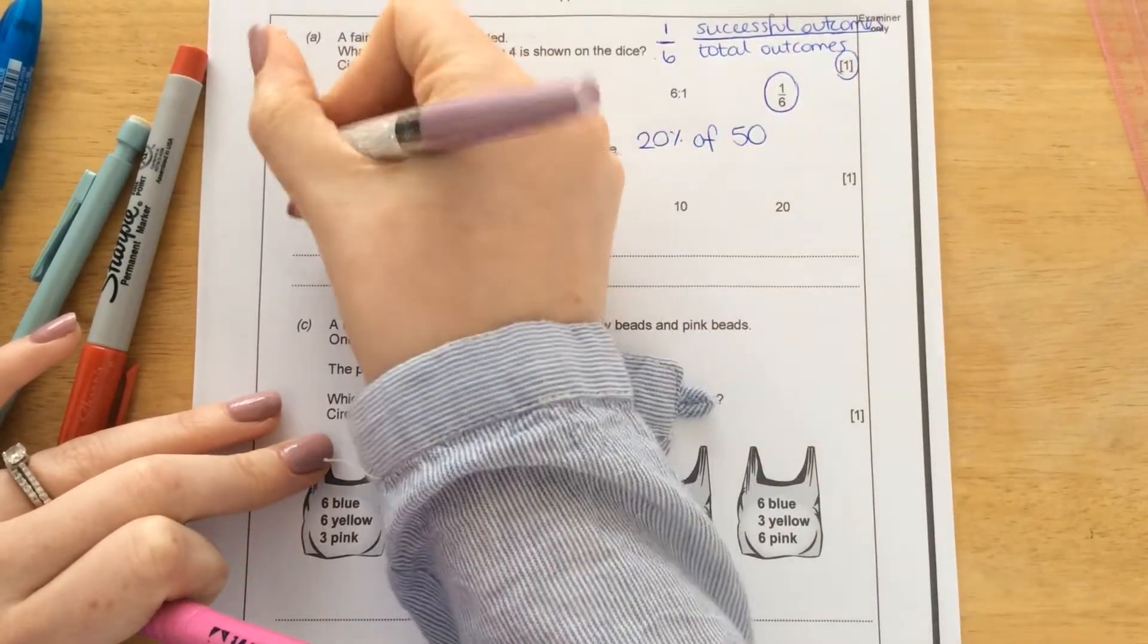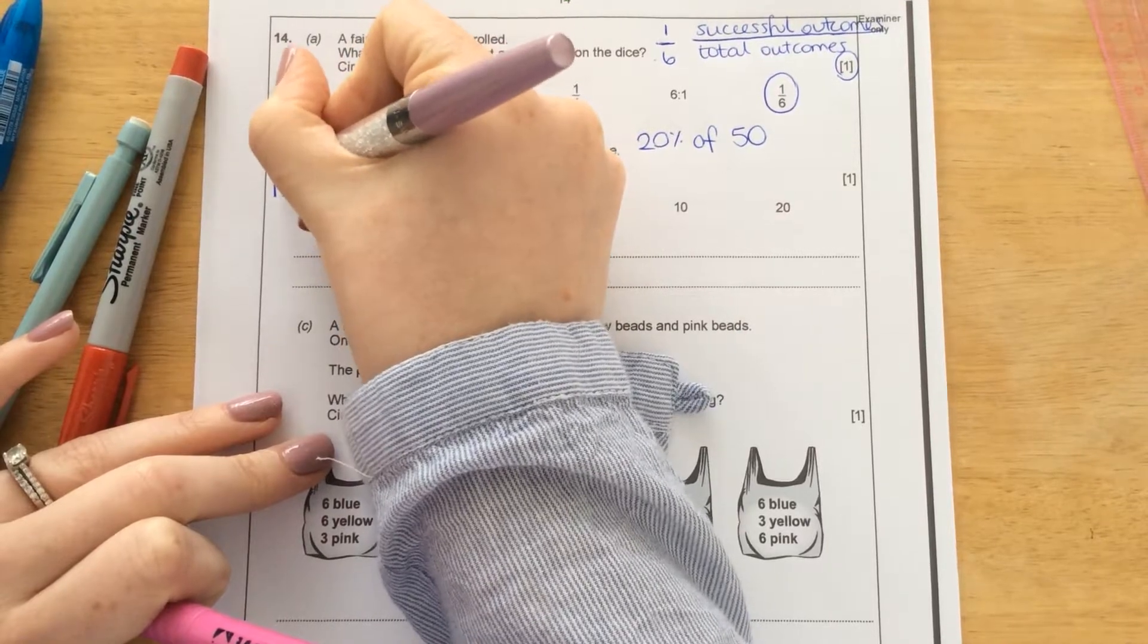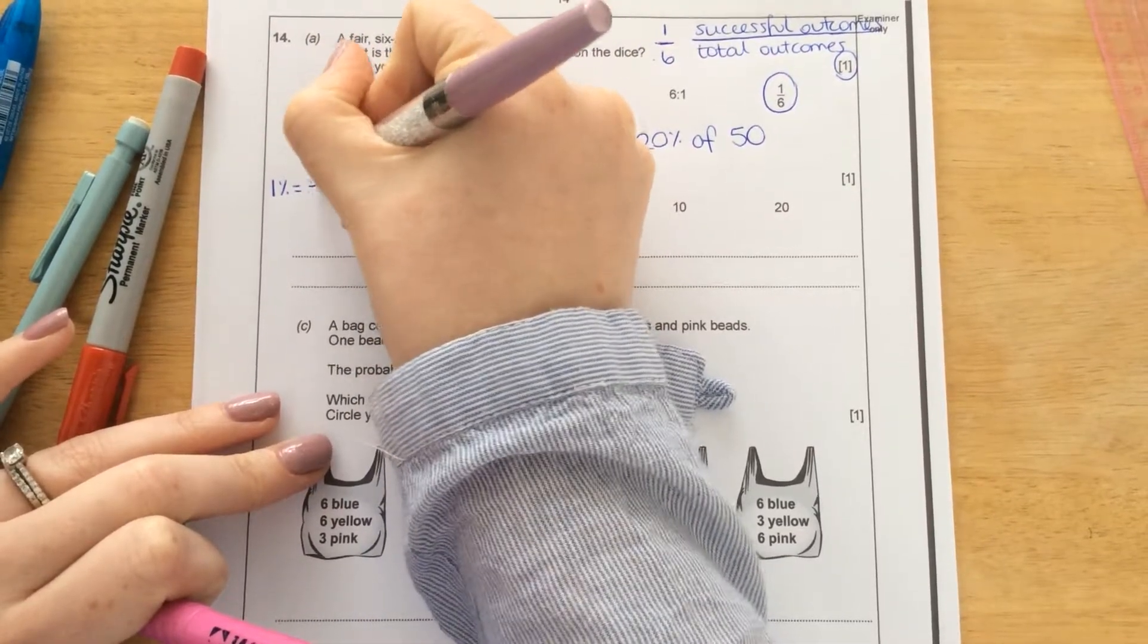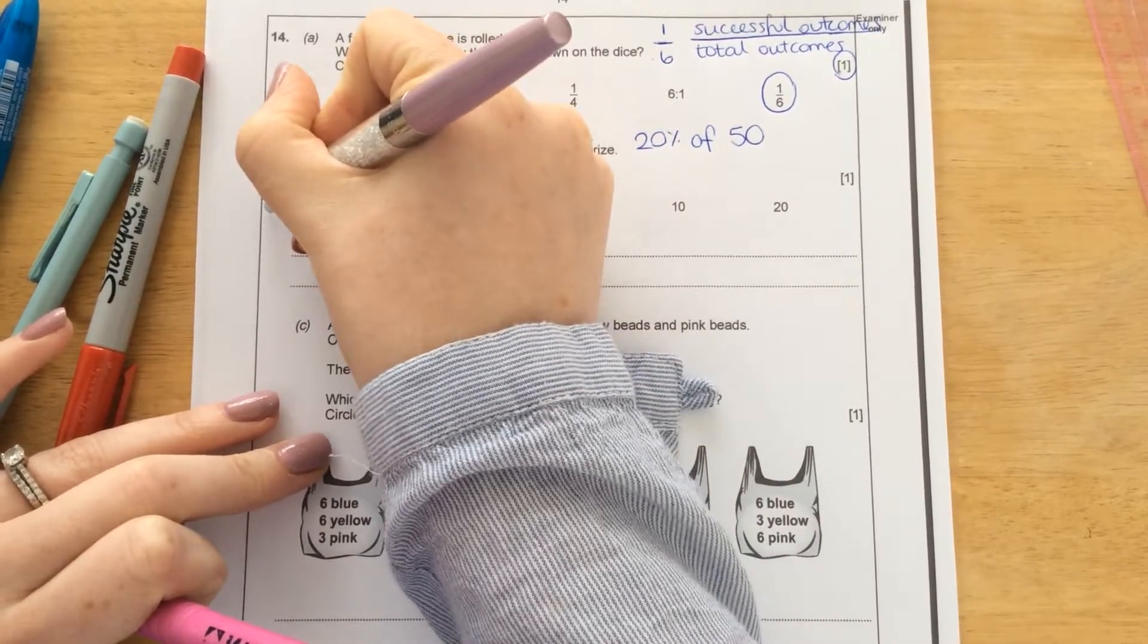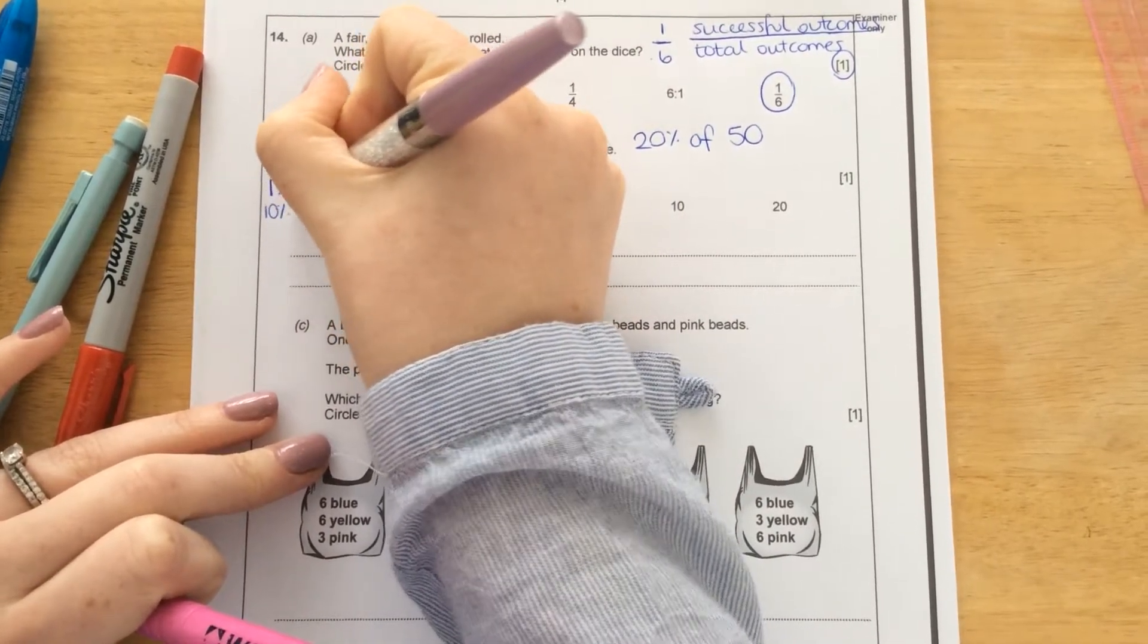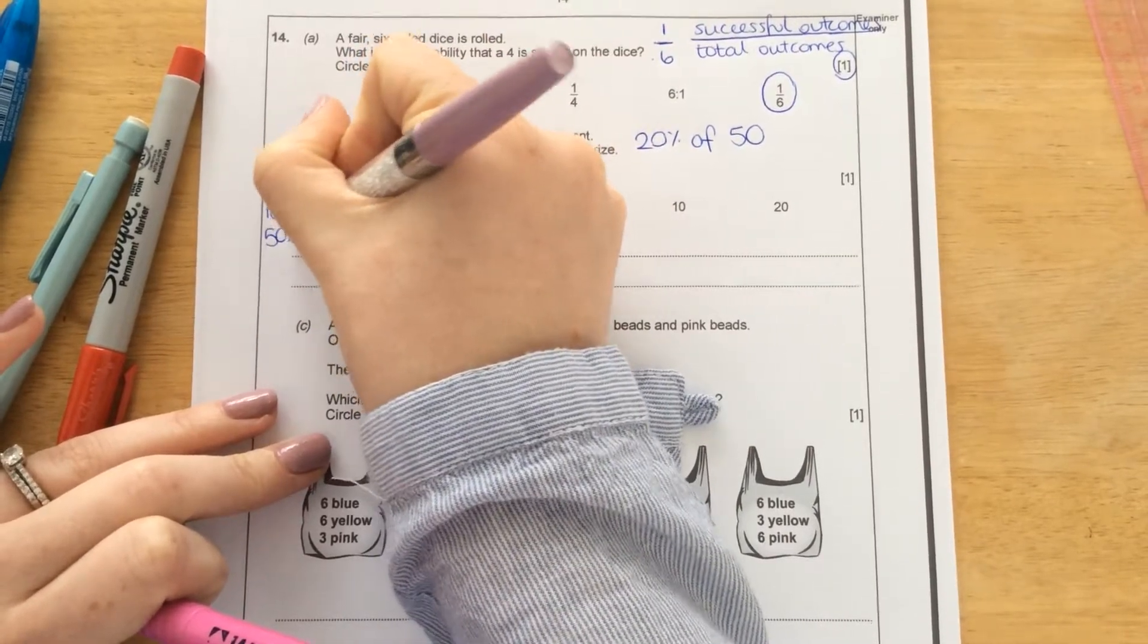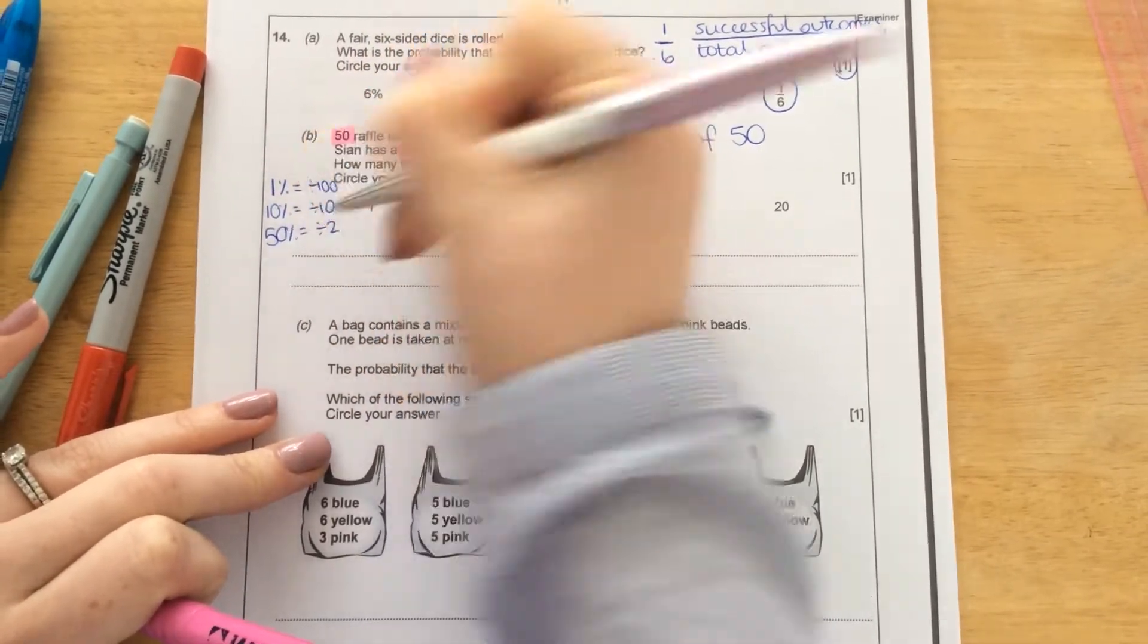Well, percentages. The easiest way to do percentages without a calculator. If we know that to find 1%, we've got to divide the number by 100. To find 10%, we divide the number by 10. And to find 50%, we half it, or divide by 2.